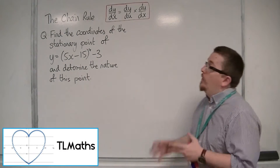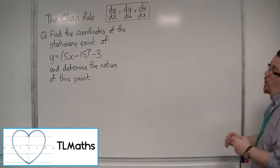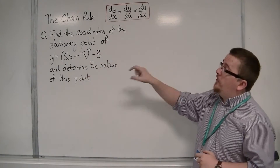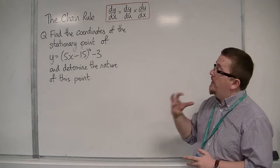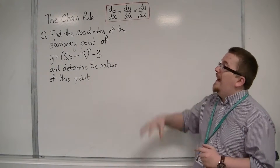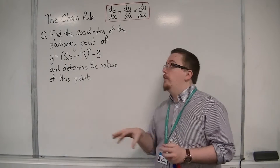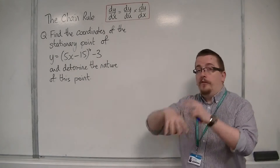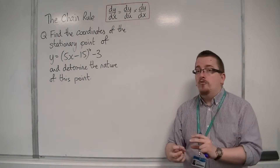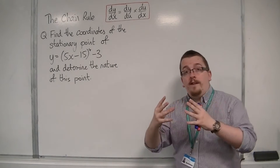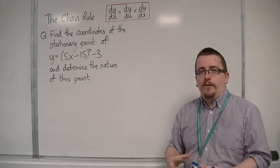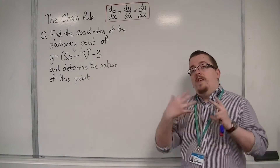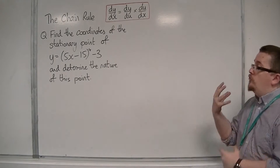Let's say we want to find the coordinates of the stationary point of y = (5x - 15)^4 - 3, and determine the nature of this point. To find the stationary point, we need to find the gradient function, dy/dx, because when we set that equal to 0, we can find the stationary point.